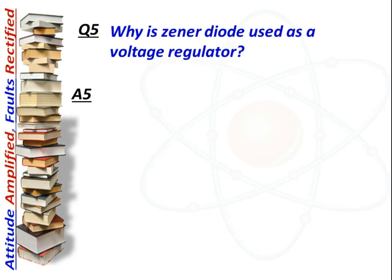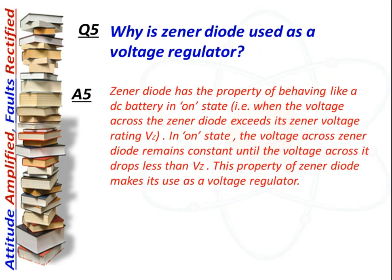Question: Why is zener diode used as a voltage regulator? Answer: In the on state, when the voltage across the zener diode exceeds its zener voltage rating Vz, the voltage across the zener diode remains constant until the voltage drops below Vz. This property makes the zener diode useful as a voltage regulator.